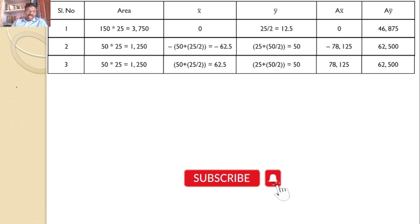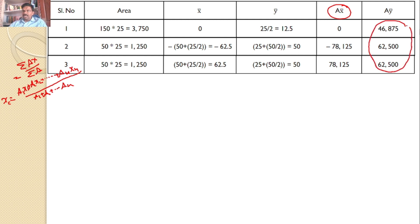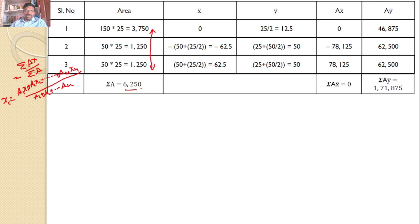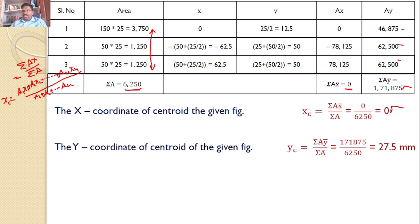The centroid formula is: xc equals (a1·x1 + a2·x2 + ... ) divided by (a1 + a2 + ...), which is sigma(a·x-bar) divided by sigma(a). Similarly for yc. Adding all a·x-bar values gives sigma(a·x-bar) equals 0. Sigma(a) equals 6250. So the x-coordinate of the centroid equals 0. The y-coordinate of the centroid equals sigma(a·y-bar) divided by sigma(a), which is 171,875 divided by 6250, giving yc equals 27.5 mm.